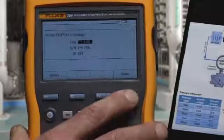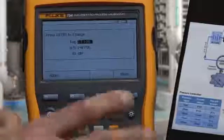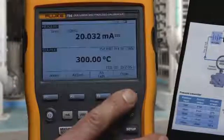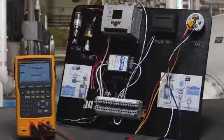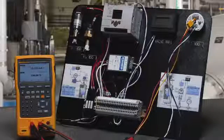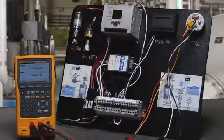It's done, tag serial number and ID of who did the work, and we're done because it passed the test. We have completed documenting the performance of this RTD transmitter using the 754 documenting process calibrator.